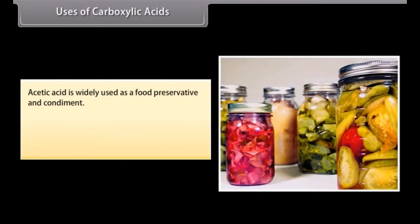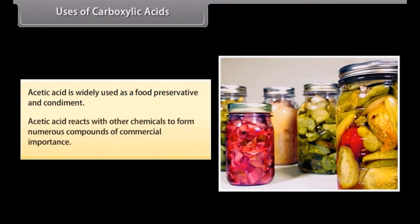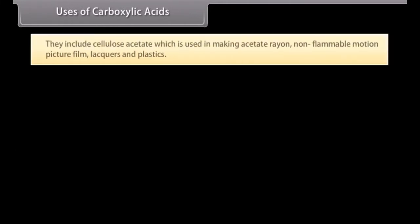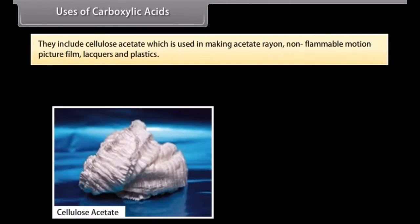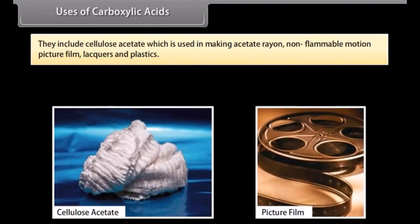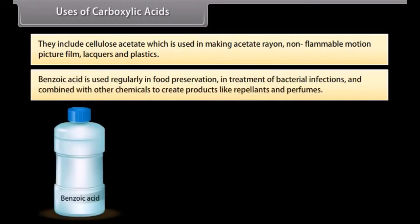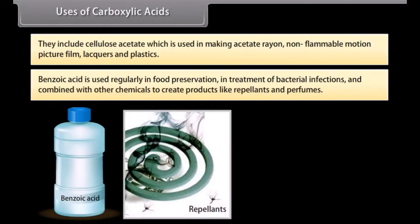Uses of carboxylic acids: Acetic acid is widely used as a food preservative and condiment. Acetic acid reacts with other chemicals to form numerous compounds of commercial importance. These include cellulose acetate, which is used in making acetate rayon, non-flammable motion picture film, lacquers and plastics. Benzoic acid is used regularly in food preservation, in treatment of bacterial infections, and combined with other chemicals to create products like repellents and perfumes.